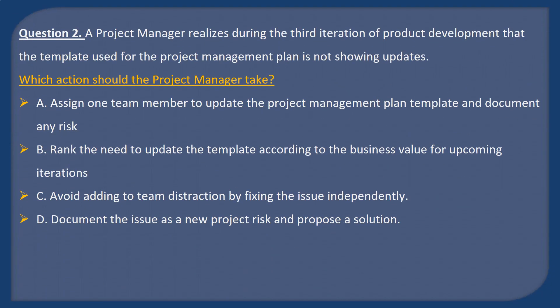Question 2. A project manager realizes during the third iteration of product development that the template used for the project management plan is not showing updates. Which action should the project manager take? A: Assign one team member to update the project management plan template and document any risk. B: Rank the need to update the template according to the business value for upcoming iterations.